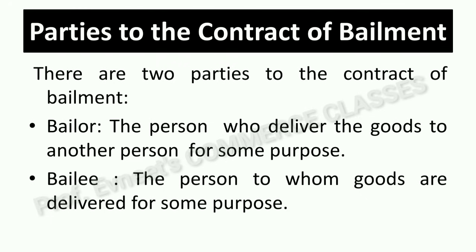Next is parties to the contract of bailment. There are two parties in a bailment contract: one is the bailer and one is the bailee. The bailer is the person who delivers the goods to another person for some purpose. The person to whom the goods are delivered is the bailee. For example, in our previous example, Suman was the bailer and the tailor, to whom the clothes were given for stitching, was the bailee.